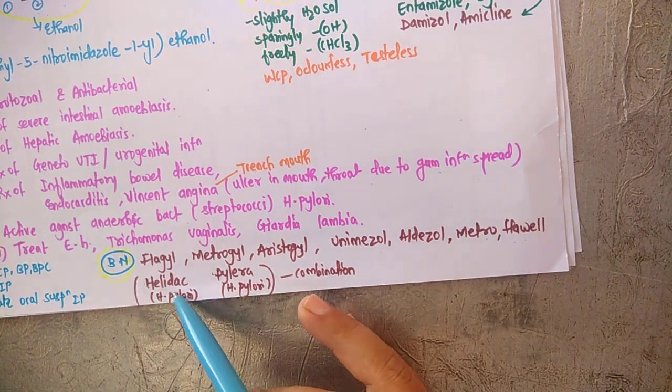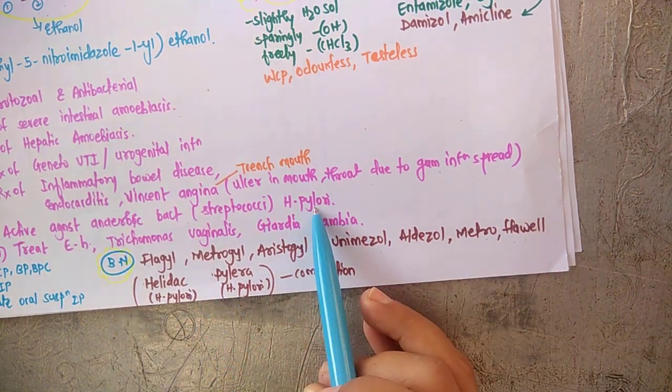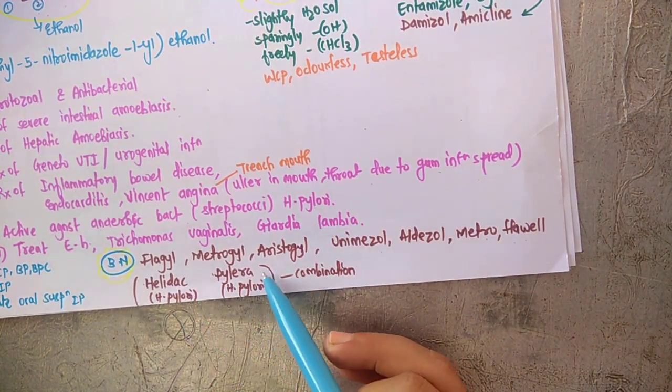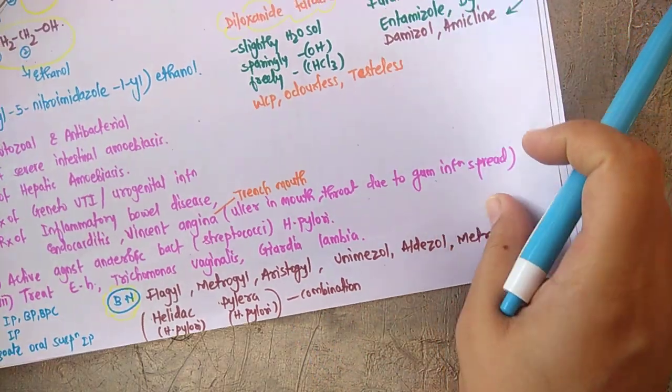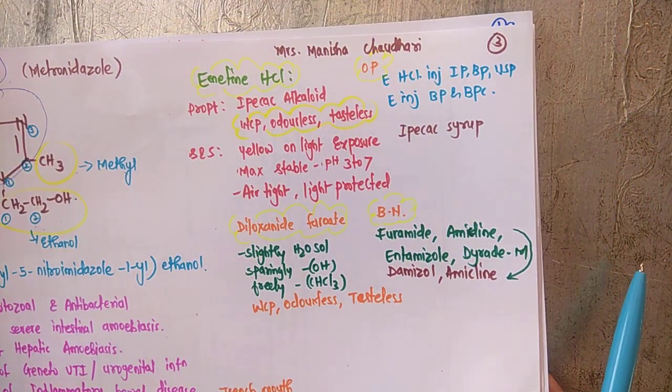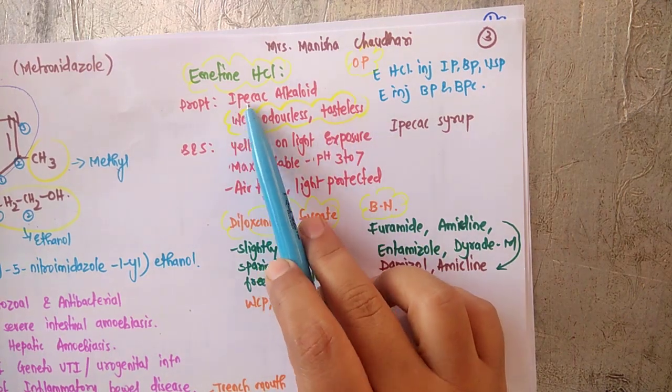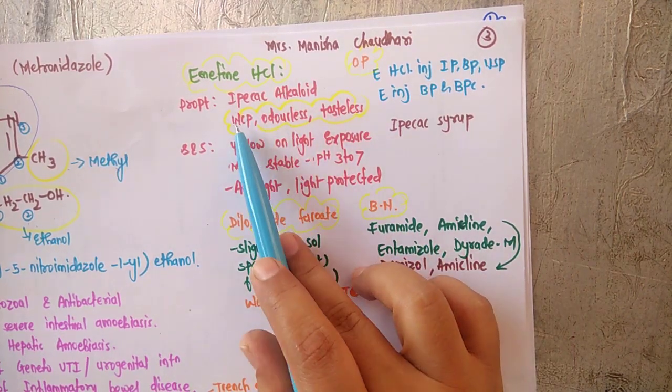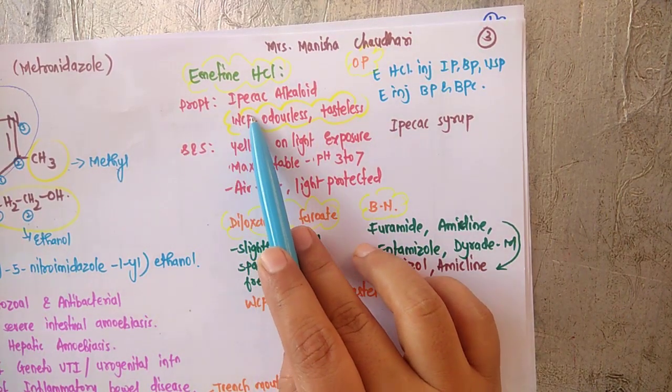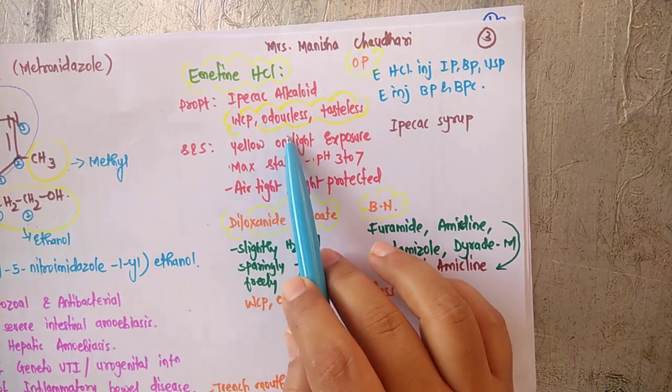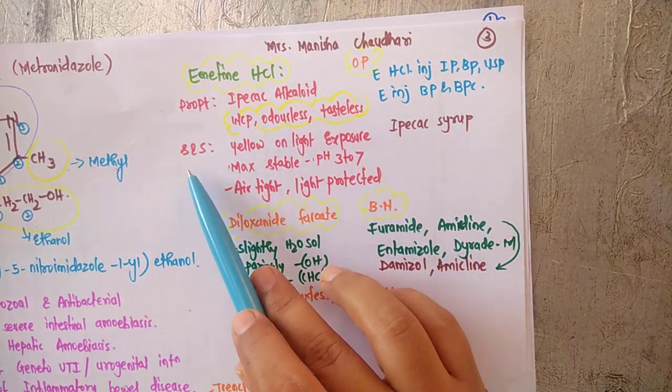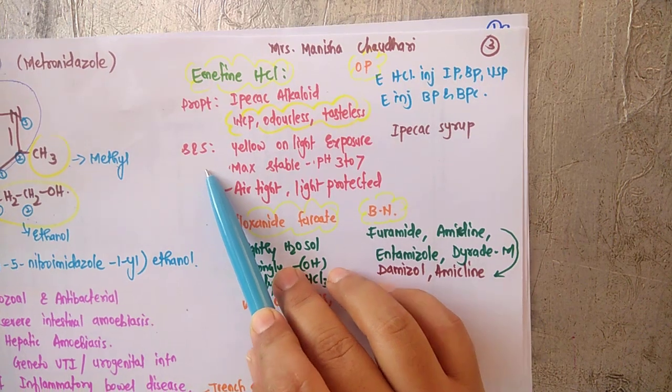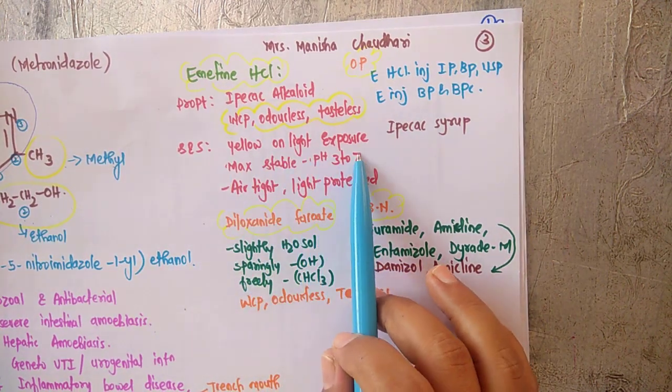Now coming towards the remaining two drugs. Emetine hydrochloride is an alkaloid which is obtained from ipecac. The properties are white crystalline powder, odorless as well as tasteless.